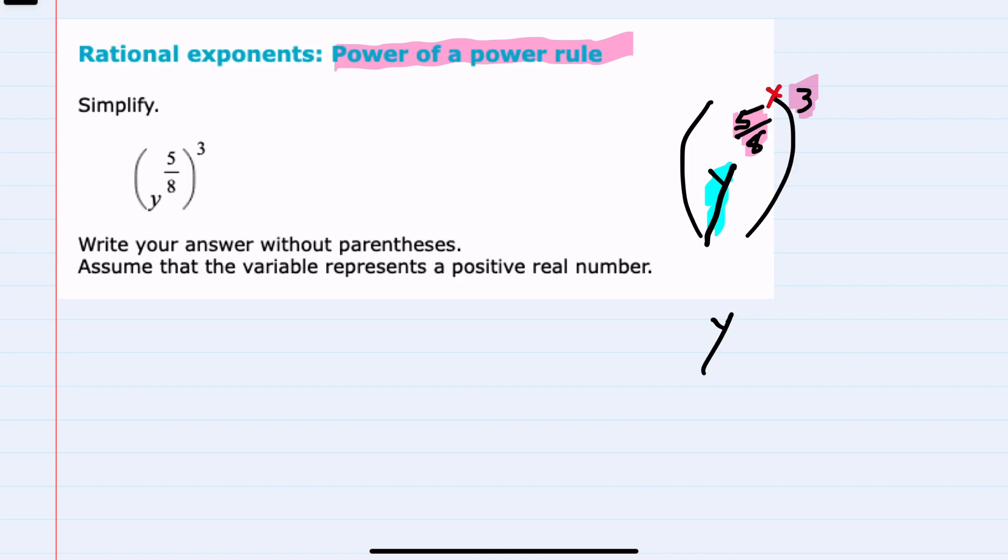So our new exponent will be 5 eighths times 3. Multiplying 5 eighths and 3, we can multiply straight across the numerator.